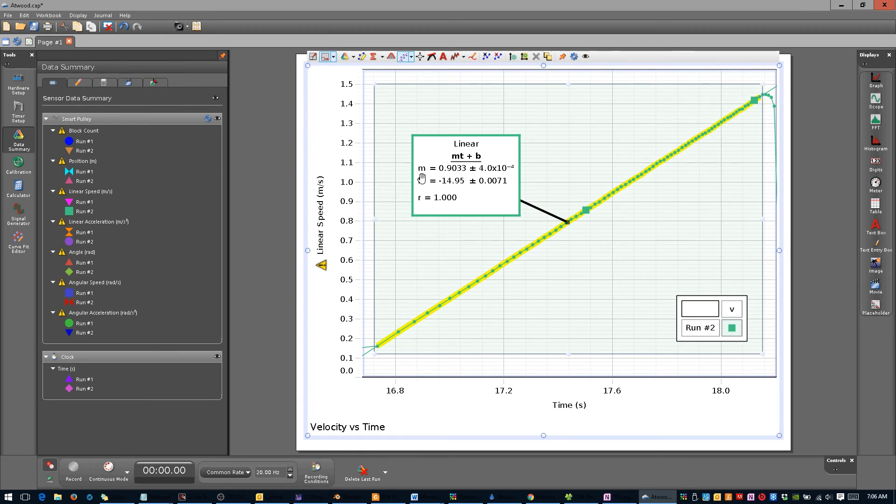Based on the one-dimensional motion experiment, and the fact that this is a graph of velocity versus time, you should understand the significance of the slope.